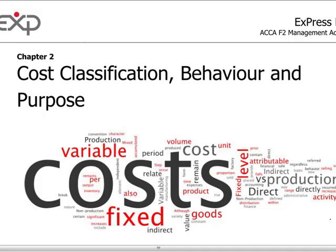Welcome to the EXP group discussion on ACCA Paper F2. Today we want to turn our attention to the topic of cost classification. The attempt here is to identify and define costs according to different categories, and on a common basis, then be able to move forward and understand how these costs behave — because understanding behavior provides the key to being able to plan and budget costs going into the future.